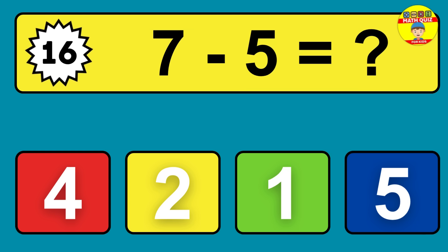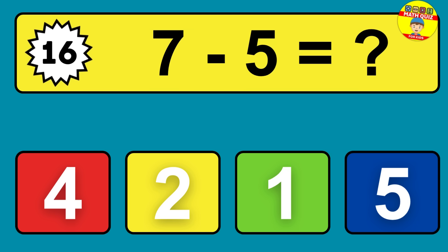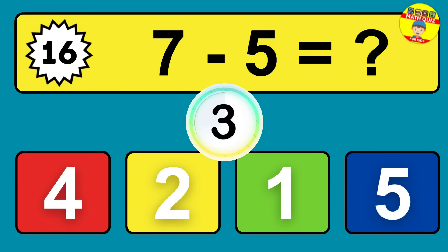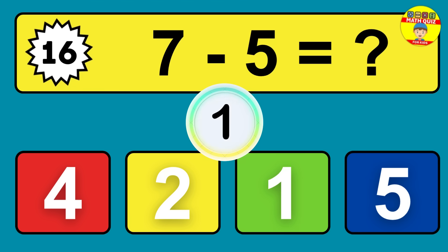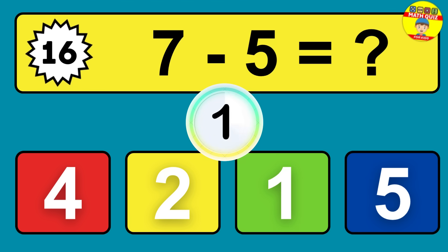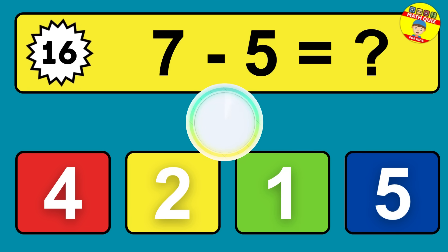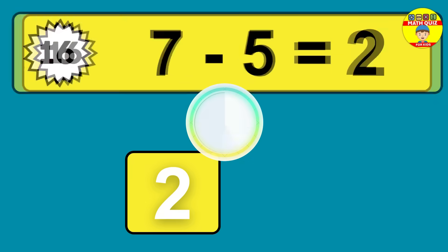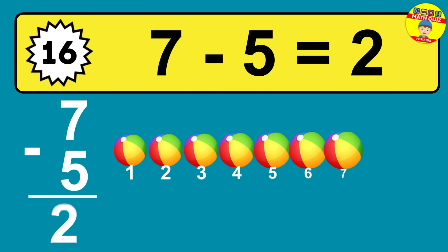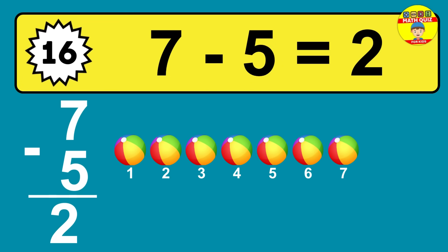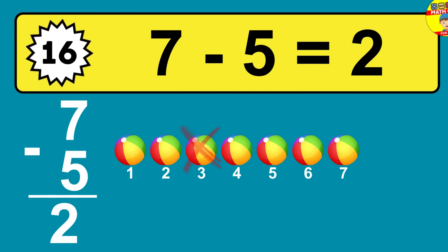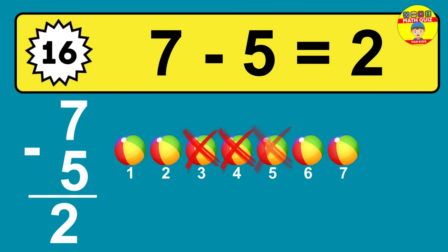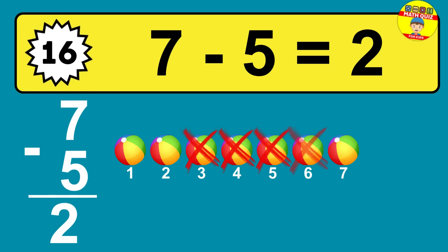Question 16: 7 minus 5 equals what? So the answer is 7 minus 5 is 2. Let's count it: 1, 2.